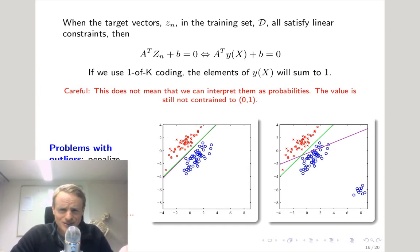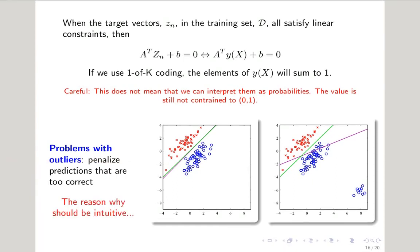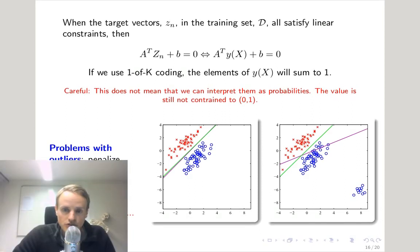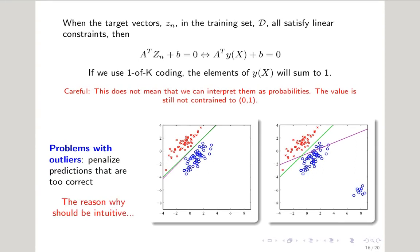So one of the cool things about the least squares solution with multiple classes is that as long as the target vectors satisfy some linear constraint, then the predictions that y makes will also satisfy that constraint. Okay, how is that useful? Well, it means that if we use a one of k coding scheme for k classes, then the elements of y of x will sum to one for any value of x. But before you think, awesome, now I can use them as probabilities? Just wait a second. The values of the model are not constrained to lie between zero and one. So we can't quite interpret them as probabilities.